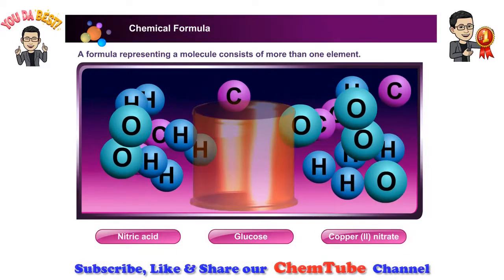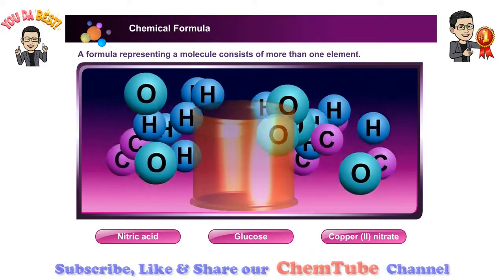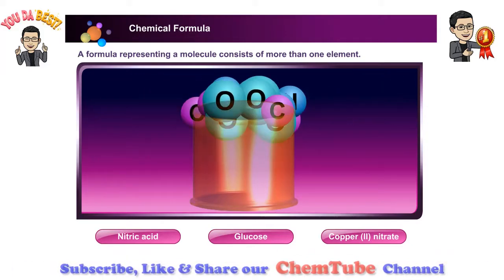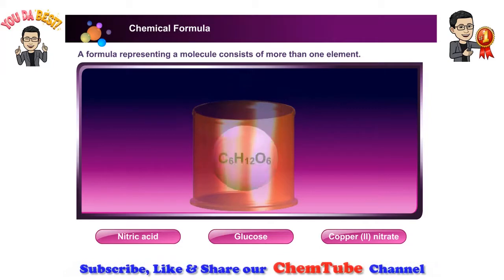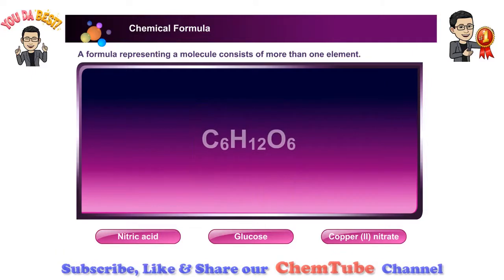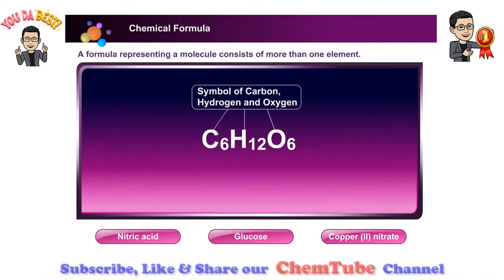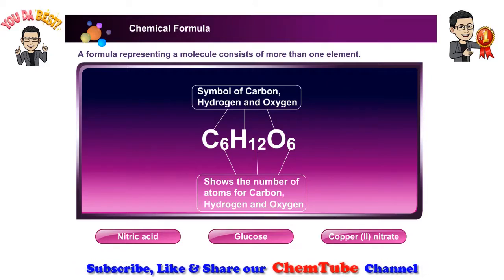One molecule of glucose consists of carbon, hydrogen, and oxygen. Glucose is a combination of six carbon atoms, twelve hydrogen atoms, and six oxygen atoms. The symbols for carbon, hydrogen, and oxygen show the number of atoms of each element.